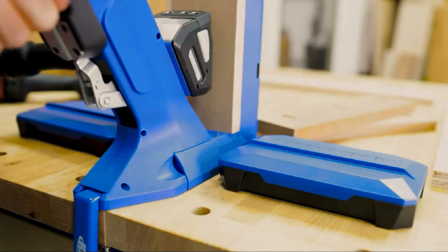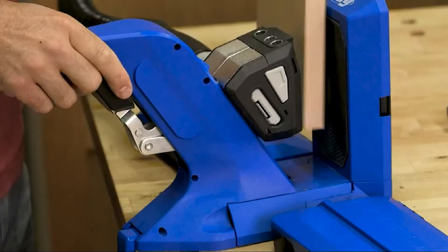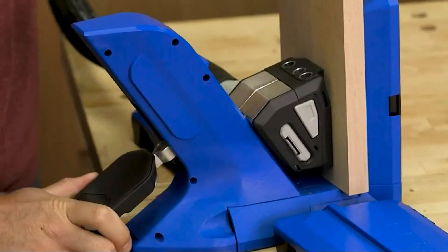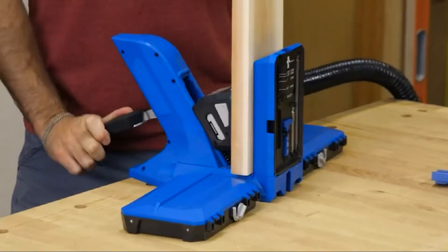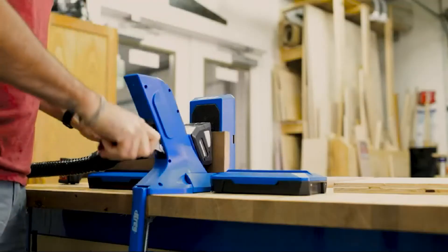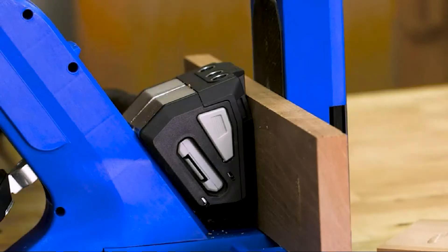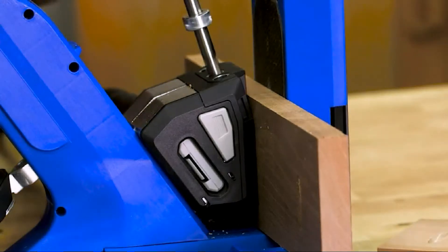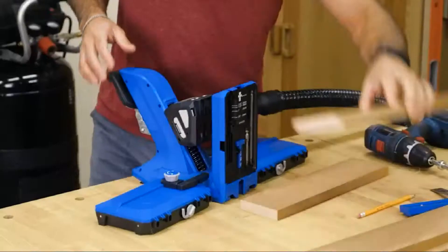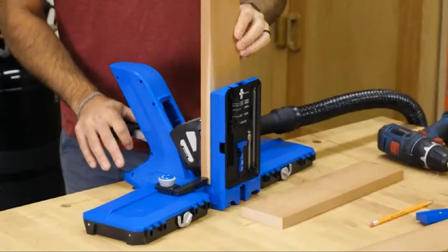Just place your material in the jig—any solid wood or plywood from half inch to one and a half inches thick—and then press down on the handle. The pocket hole jig 720 Pro does the rest, clamping against the wood and automatically positioning the drill guides perfectly to position the pocket holes exactly in your workpiece. One motion clamping sets the drill guides for every material thickness every time. This means you can work faster and more efficiently than ever before.